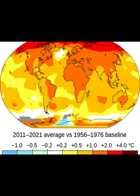Atmospheric circulation is another major driver. The Earth's rotation, combined with variations in solar radiation, drives atmospheric circulation patterns, creating high and low-pressure systems that affect weather and climate. Earth is home to various climate types, ranging from tropical to polar, each characterized by specific weather patterns.